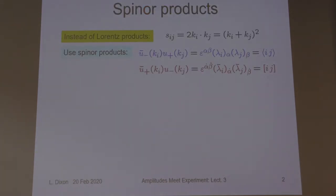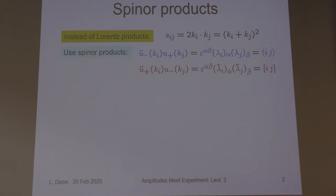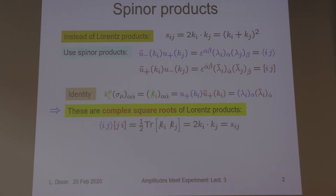This part here should not be new to you after Jake's lectures; Alex covered some of this too. We want to use not the Lorentz products S_ij — the sum of K_i plus K_j squared — but the spinor products using the same notation as Jake: this is the epsilon_{αβ} contraction of two two-component spinors. We call these the left-handed spinors and these the right-handed spinors.